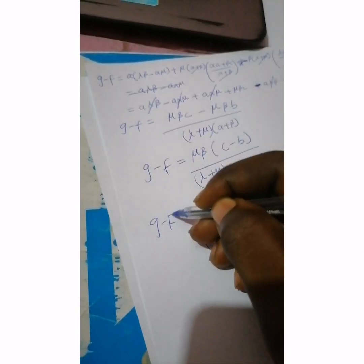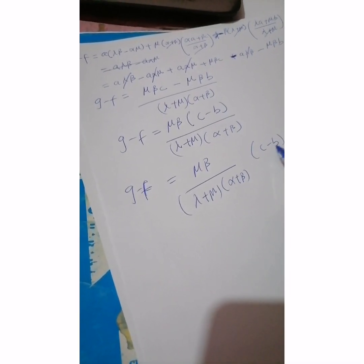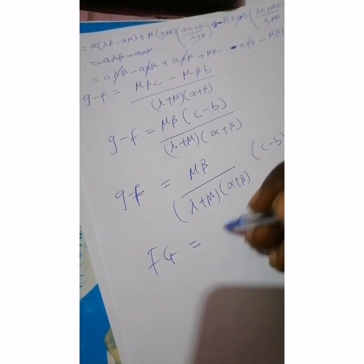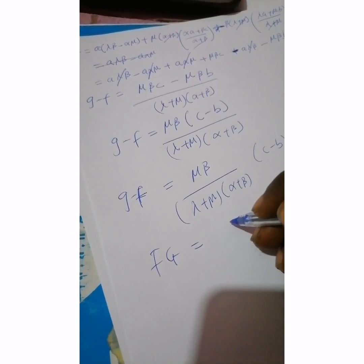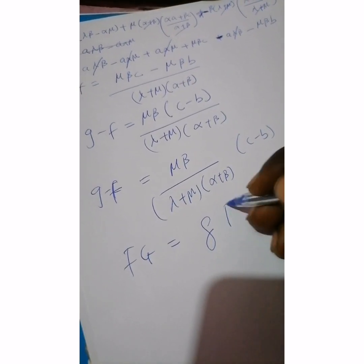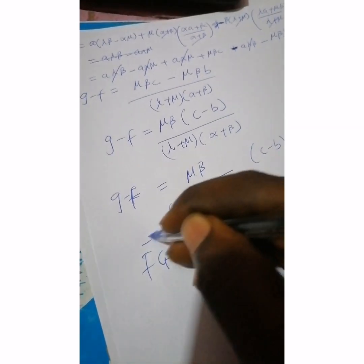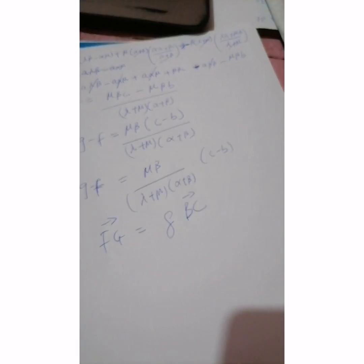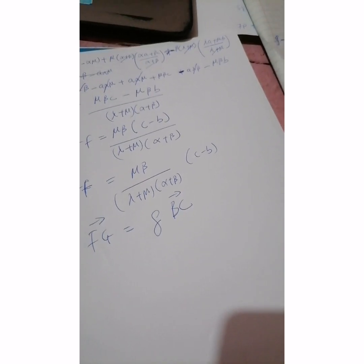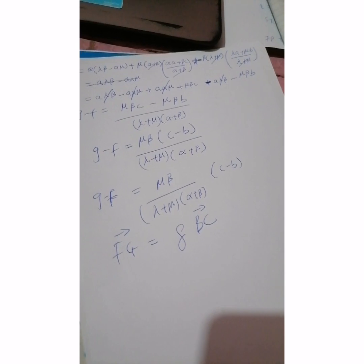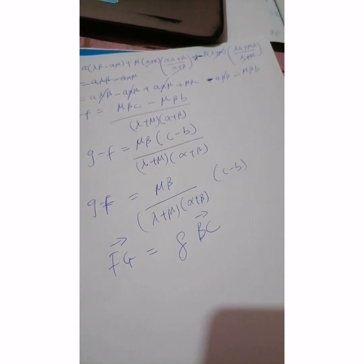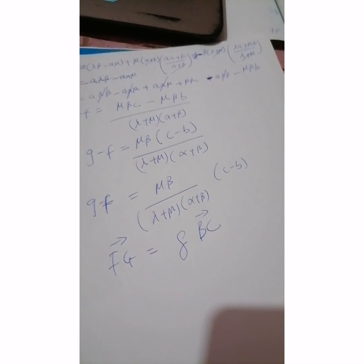Since C minus B is vector BC, we have FJ equals γ · BC where γ is a scalar. This means FJ is parallel to BC. I've proven that FJ is parallel to BC using the Side Splitter Theorem. Please go through this video again, and if you have any concerns or issues you can let us know. Thank you.